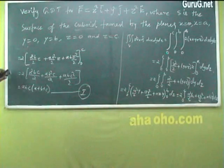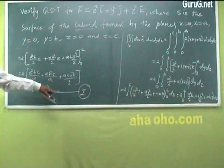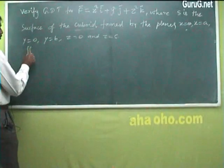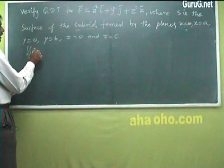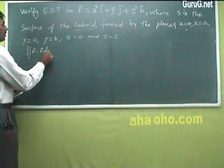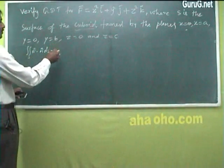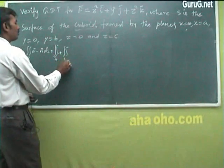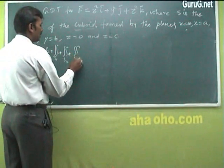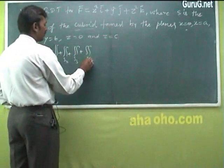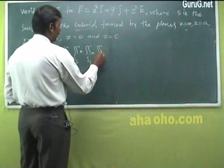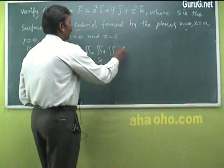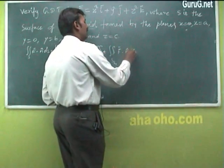Now for the left-hand side: the double integral over S of F·n̂ dS. Since S is the surface of the cuboid, we split it into six faces: S1, S2, S3, S4, S5, and S6. We form a table for each surface.